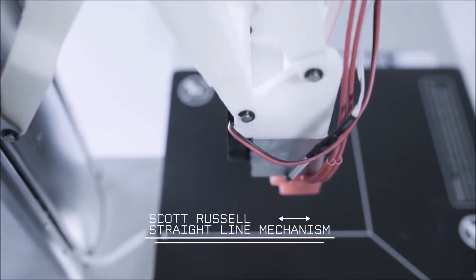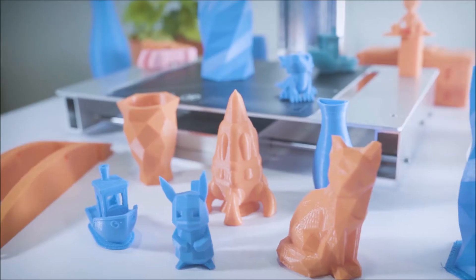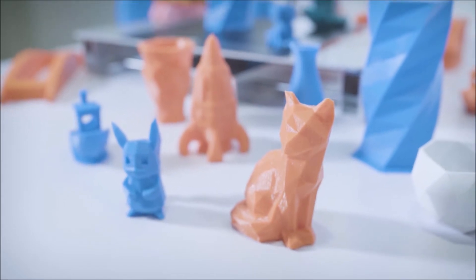COPPA is the world's first 3D printer utilizing the Scott Russell straight line mechanism. Used in pick-and-place robotics, this precision technology guarantees quality consistently.